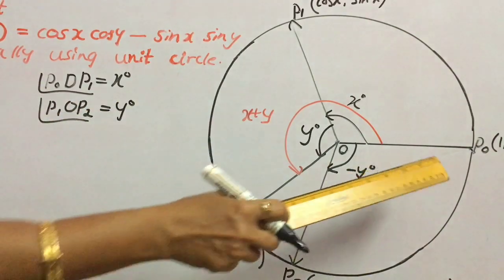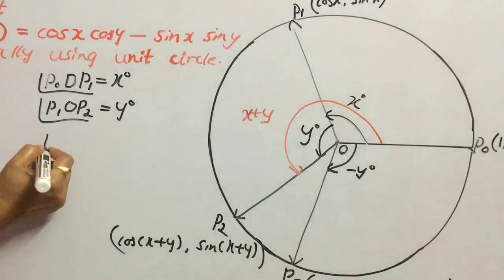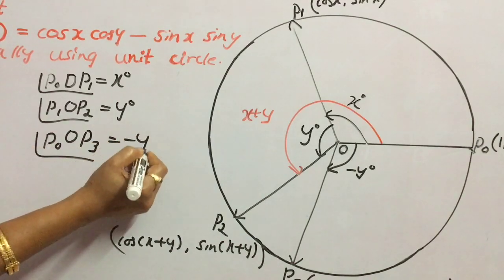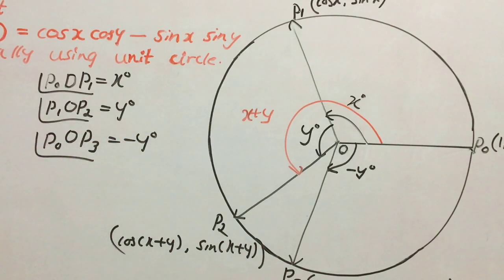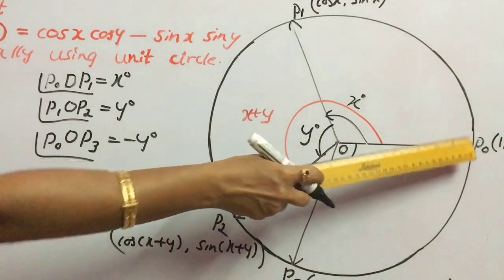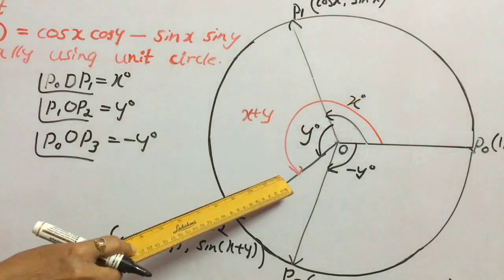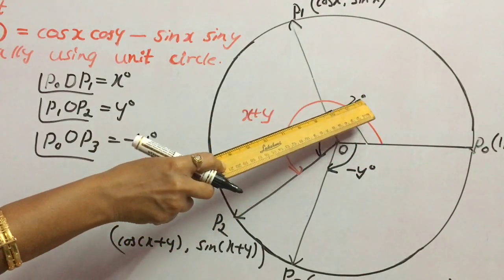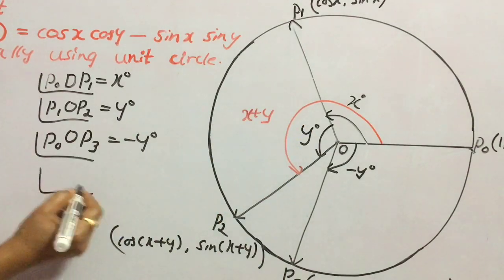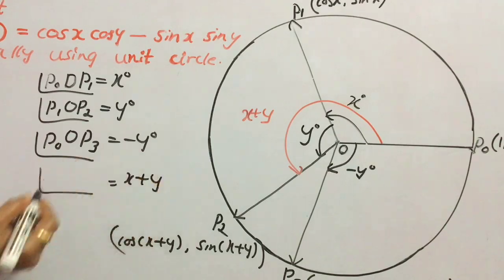And finally, angle P0, O, P3 equal to minus y degrees. Along with this, if we measure angle P0, O, P2 — that means this full angle — the addition of x degrees and y degrees gives x plus y degrees. That is, angle P0, O, P2 equals x plus y degrees.